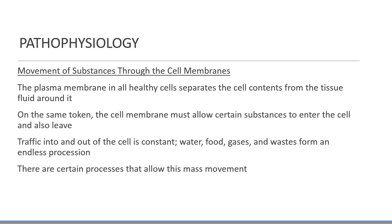Osmosis is the movement of water — a solvent — across a semi-permeable membrane from an area of lower solute concentration to an area of higher solute concentration, to minimize the difference in concentrations between the membrane. In the human body, the solute consists of electrolytes such as sodium, potassium, and molecules like glucose. Selective permeability is accomplished through pores in the membrane selected on the basis of size, shape, or electrical charge of the molecule. When equal solute concentration exists on each side, it's isotonic. The side with higher concentration is hypertonic, and the side with lower concentration is hypotonic. The difference in concentration is called the osmotic gradient.